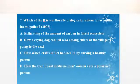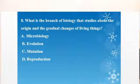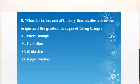What is the branch of biology that studies about the origin and the gradual change of living things? A. Microbiology. B. Evolution. C. Mutation. D. Reproduction. Evolution is a branch of biology which deals about the gradual change of living organisms. The answer is B, evolution.